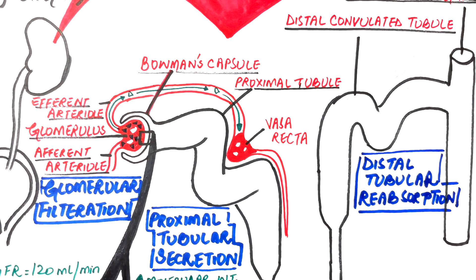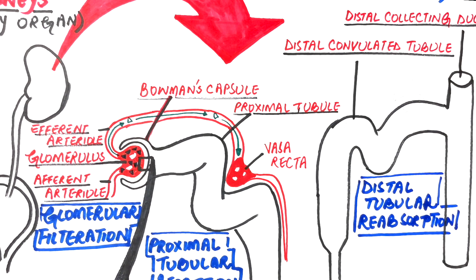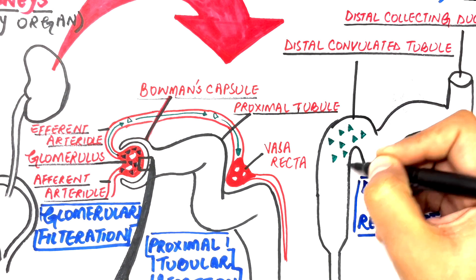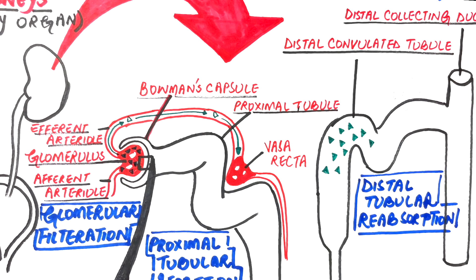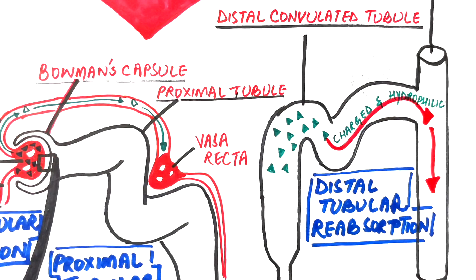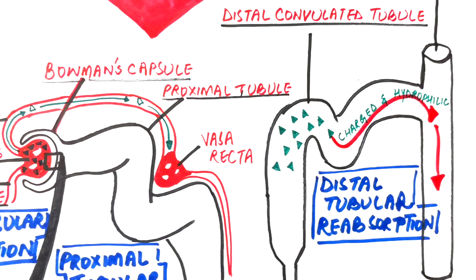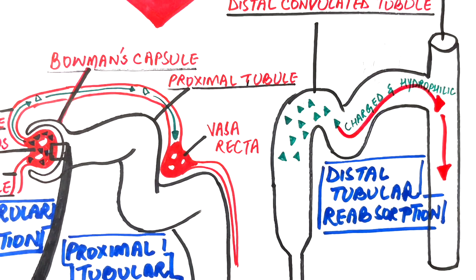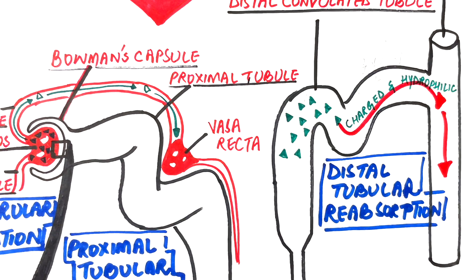The third mechanism which plays its part in drug clearance is distal tubular reabsorption. The concentration of the drug in the distal convoluted tubules will rise automatically following the process of filtration and secretion in the Bowman space and proximal tubules respectively. In the distal convoluted tubule, if the drug is charged and hydrophilic, although it is in a high concentration here, still it would be able to excrete out of the body through urine.